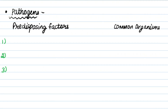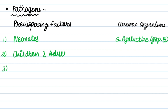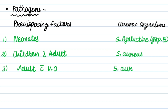We will now make a table of pathogens, predisposing factors, and common organisms. For neonates, the common organism is Streptococcus agalactiae, Group B Streptococcus. For children and adults, the common organism is Staph aureus. For adults with vertebral osteomyelitis, the causative organisms are Staph aureus and Mycobacterium tuberculosis.